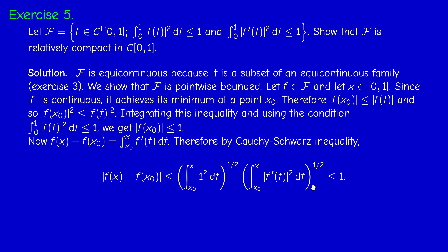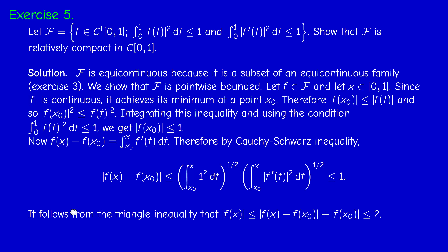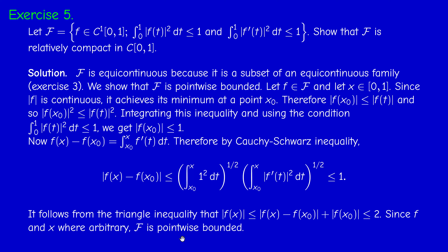So f(x) minus f(x₀) is less or equal than 1 always. Therefore, by the triangle inequality, |f(x)| ≤ |f(x) − f(x₀)| + |f(x₀)| < 1 + 1 = 2. This is true for every f and for every x. This means that F_x is bounded — it's contained in the interval [−2, 2] — which is pointwise boundedness. Since we are working in ℝ, a finite-dimensional space, this is the same as saying F_x is relatively compact.